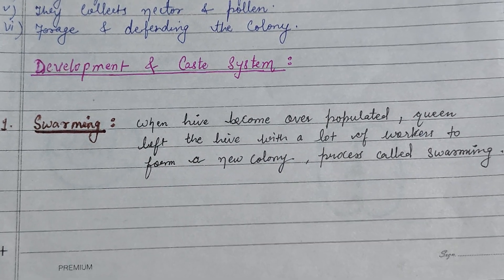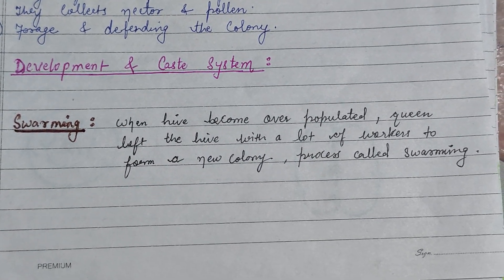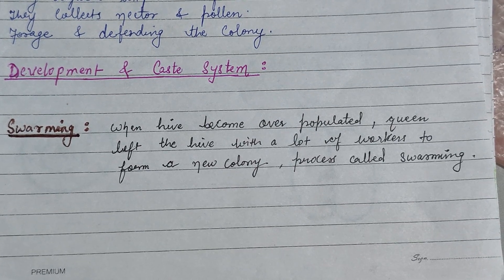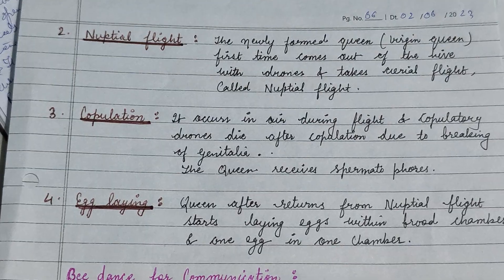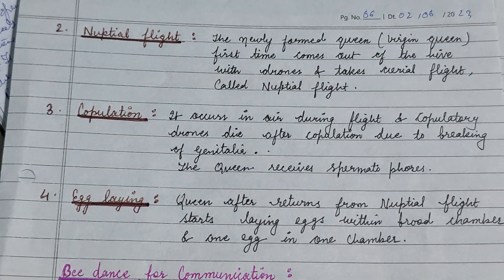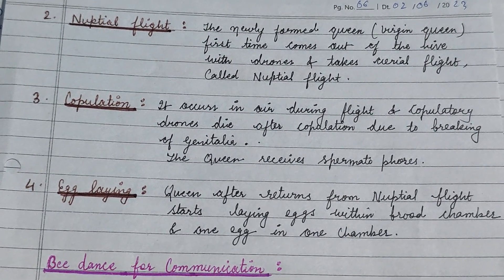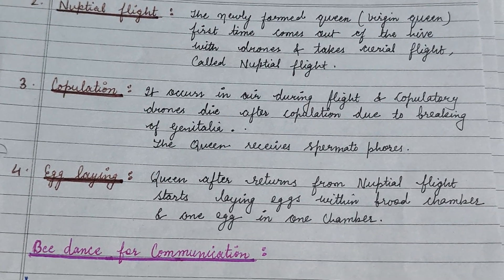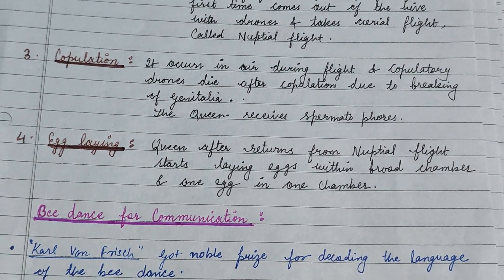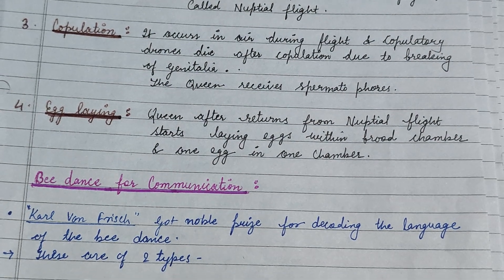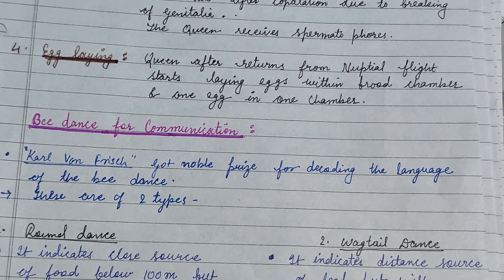Some important terms in honeybee development: swarming occurs when the hive becomes overpopulated and the queen leaves the hive with many workers to form a new colony. Nuptial flight is when the newly formed queen first comes out of the hive, takes an aerial flight with drones, and copulation occurs during this flight. Eggs are then laid by the queen, one egg per chamber.